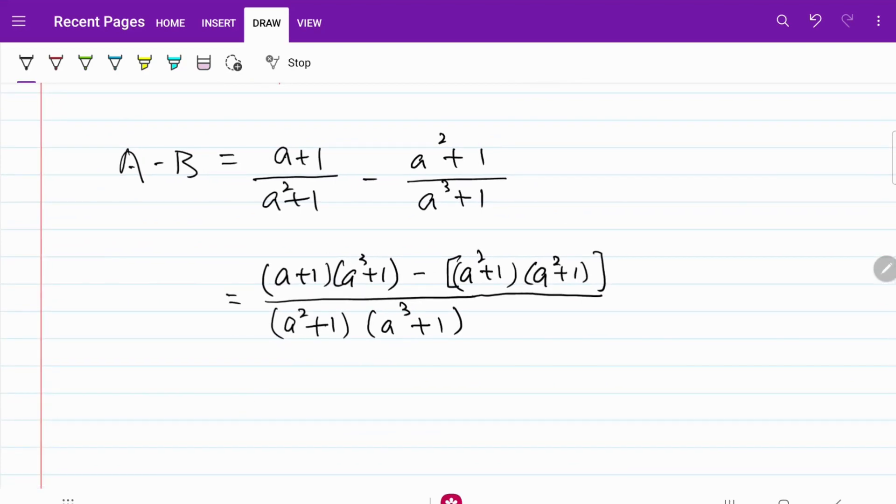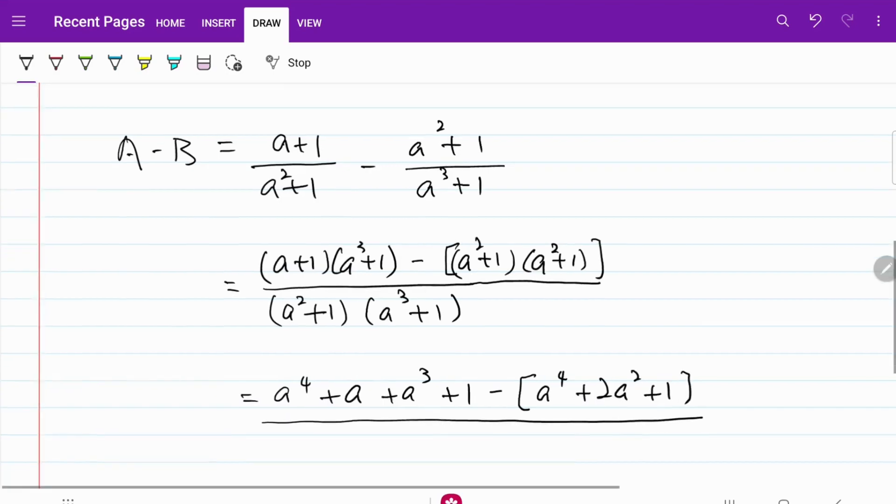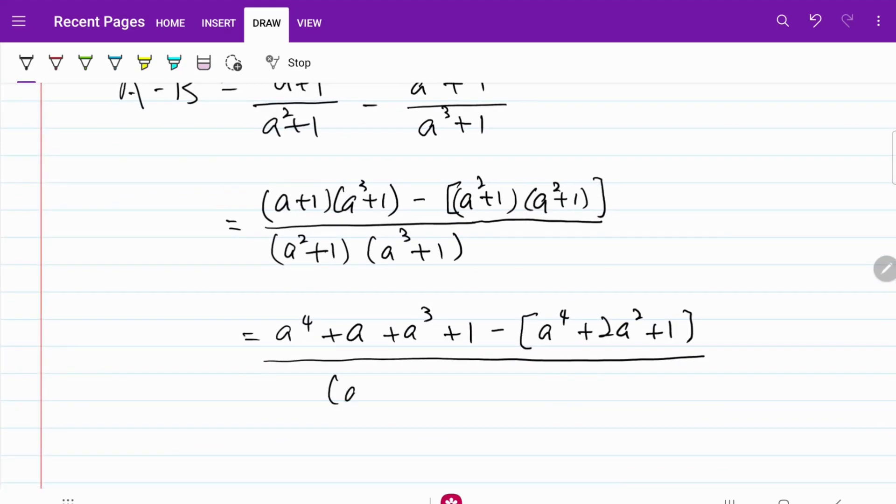What I now have is a to the 4th power plus a plus a cubed plus 1 minus the square of a squared plus 1, which is equal to a to the 4th power plus 2a squared plus 1 over the same common denominator, which is a squared plus 1, a cubed plus 1.